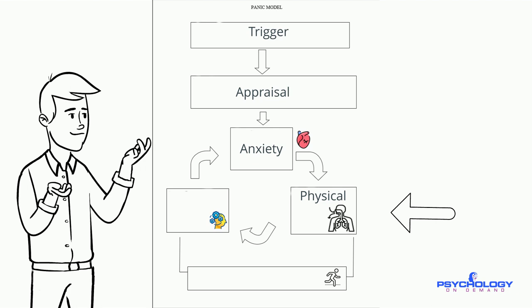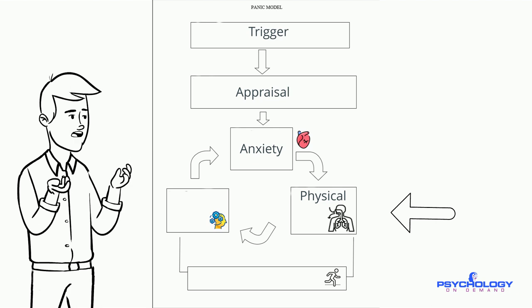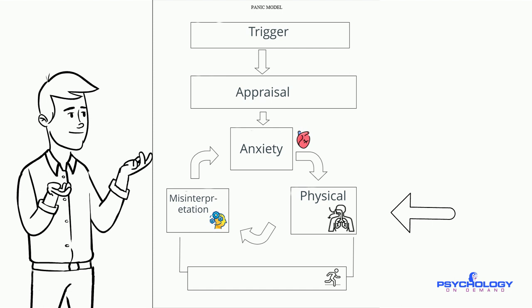For a panic attack to happen, the person will need to misinterpret these symptoms as dangerous. When the symptoms are seen as dangerous, this causes even more anxiety and the cycle continues until there is disabling fear.